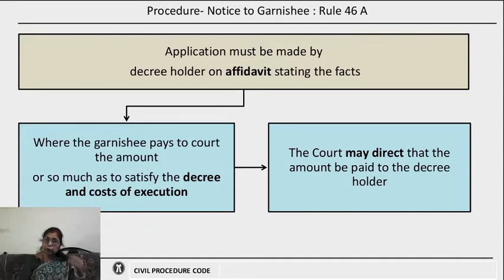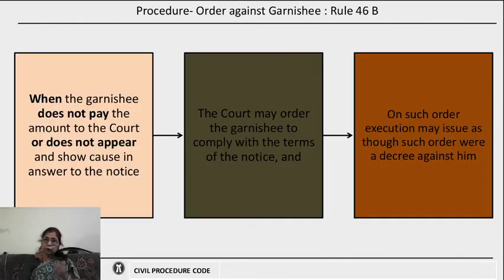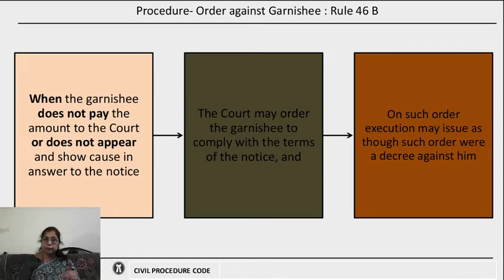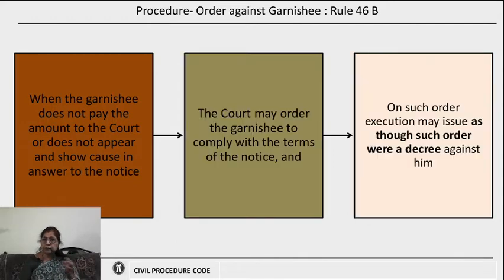Where the garnishee pays to the court the amount sufficient to satisfy the decree and costs of execution, that amount paid into court will be directed accordingly. Rule 46B says that if the garnishee does not pay the amount to the court, or does not appear after notice is given, or does not show cause why the order should not be issued against him, then the court may order the garnishee to comply with the terms of the notice. On such order, execution may be issued immediately as though that order is a decree against the garnishee.